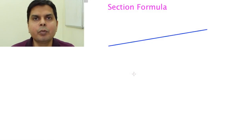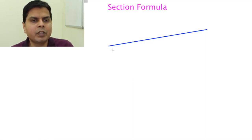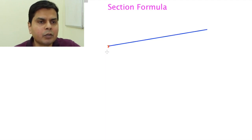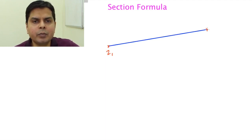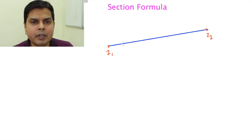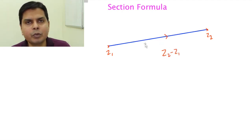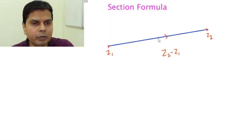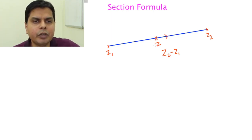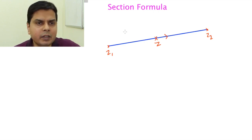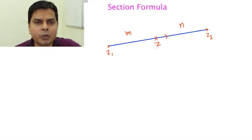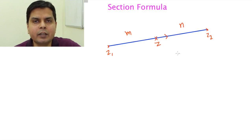Now we will see one very important formula which is called the section formula. Suppose you have been given two complex numbers: the first complex number is z1 and the second complex number is z2. We have seen that the vector from z1 to z2 is represented by z2 minus z1. Suppose I want to identify any generic point z somewhere on this line, intersecting it in ratio m to n. From coordinate geometry, you must know that the x and y coordinates of this point are given by formulas.